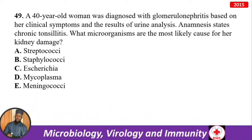A 40-year-old woman is diagnosed with glomerulonephritis; anamnesis shows chronic tonsillitis. This is acute post-streptococcal glomerulonephritis. The causative microorganism is Group A Streptococcus. This disease is immune-mediated, type 3 (complex-mediated) hypersensitivity. The other immune-mediated disease caused by Group A Streptococcus is rheumatic fever, which is type 2 hypersensitivity.